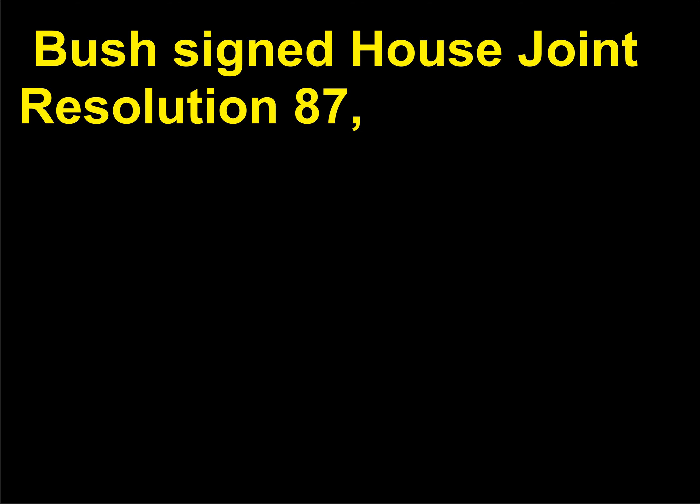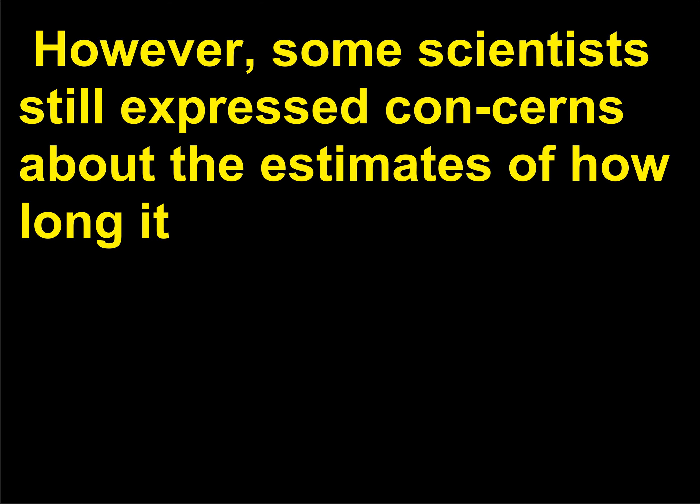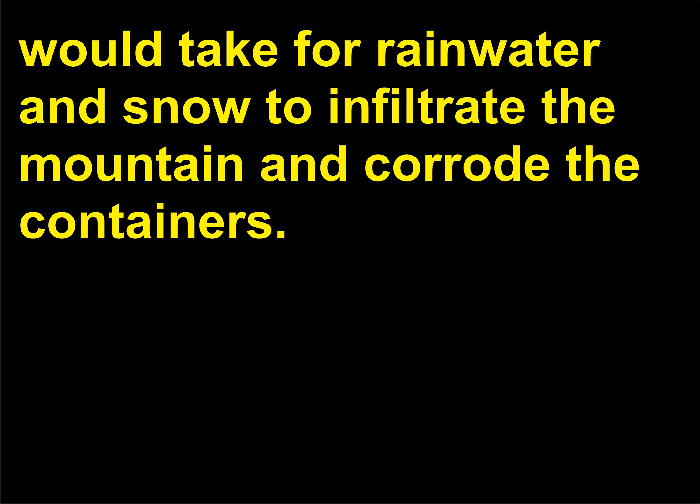On July 23, 2002, President George W. Bush signed House Joint Resolution 87, allowing the Department of Energy to establish a repository in Yucca Mountain to safely store nuclear waste. However, some scientists still expressed concerns about the estimates of how long it would take for rainwater and snow to infiltrate the mountain and corrode the containers.